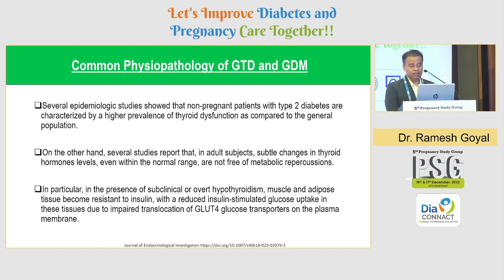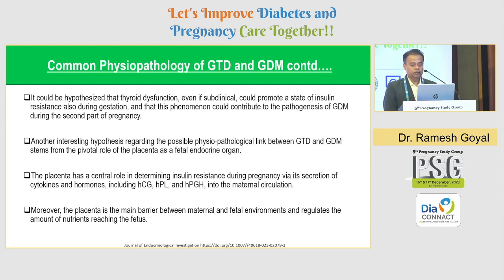Regarding common pathophysiology of GTD and GDM: several studies show that non-pregnant patients with type 2 diabetes have higher prevalence of thyroid dysfunction, and subtle changes in thyroid hormone levels, even within normal range, are not free of metabolic repercussions. In people with subclinical or overt hypothyroidism, muscle and adipose tissue become insulin resistant. In pregnant women with subtle thyroid dysfunction, due to increased insulin resistance, there can be an increase in the prevalence of GDM. The anti-insulin placental hormones — HCG, HPL, and human placental growth hormone — also play a pivotal role, and the placenta regulates nutrients reaching the fetus, including iodine transfer.